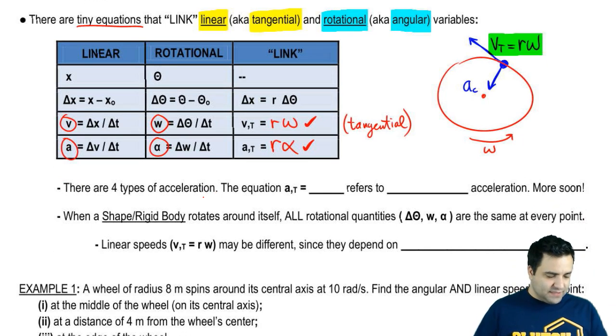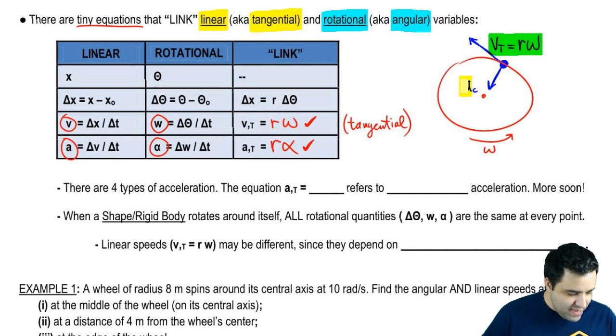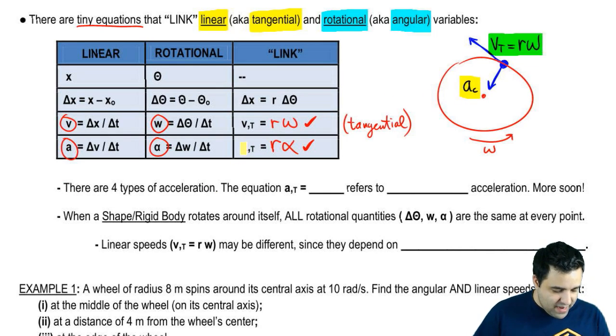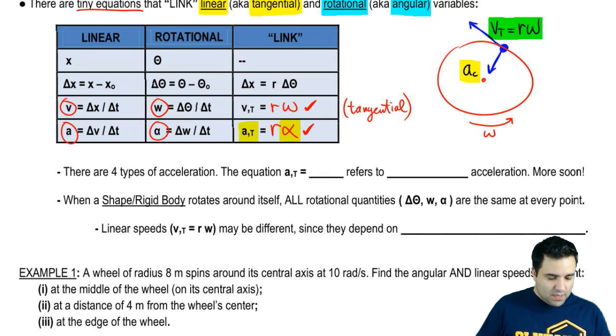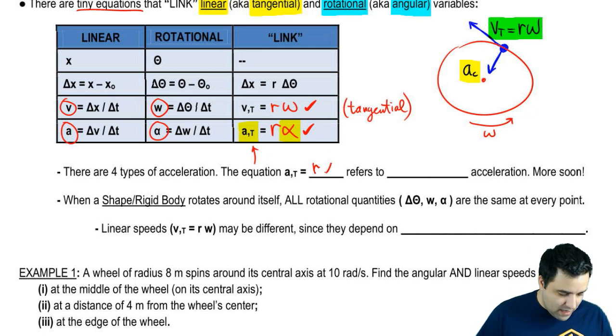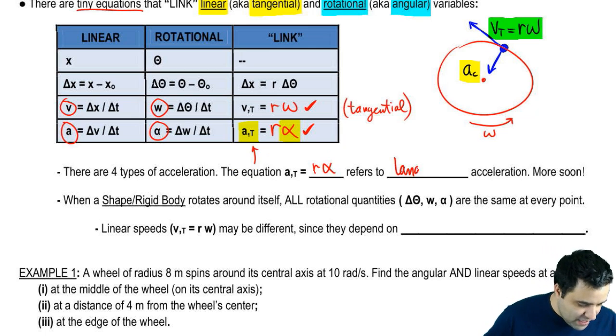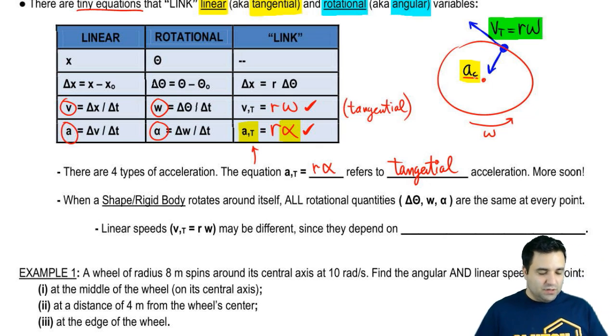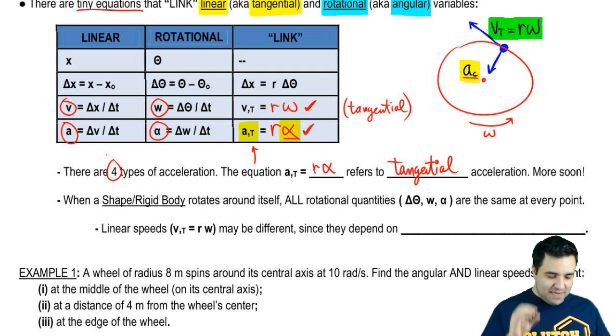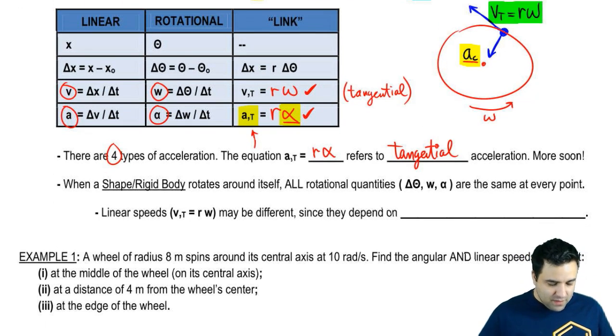I want to quickly mention that there are four types of acceleration. I already mentioned two here. We have ac, and actually, I already mentioned three. We have ac, we have at, and we have alpha. There's a fourth one, but we're going to talk about that later. I want to just be very clear here that this equation right here, at equals r alpha, refers to the tangential acceleration. It doesn't refer to the centripetal acceleration. It doesn't refer to the angular or rotational acceleration. So there's four types of acceleration. Most of them have two names, so it's going to be a mess, but I'll show you pretty soon. A few more points here.